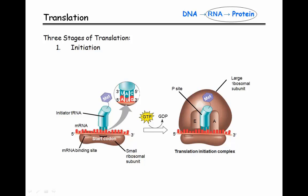Once the small subunit binds, the very first tRNA that has the anticodon complementary to the start codon is going to come in, find that start codon, and bind through hydrogen bonding. This means the very first amino acid — which happens to be methionine — is brought in at the same time. Notice we're not binding to the first three nucleotides of the mRNA; that extra area is the five-prime untranslated region. Once the first tRNA is in, the large subunit comes along and binds — that is now a ribosome ready to begin translation. That very first tRNA starts off in the P site with the amino acid attached.